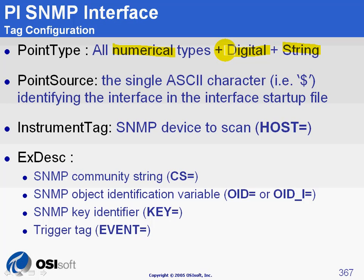Then you have the point source. As usual, this should be the same character as you configured in ICU to identify your interface. The dollar sign ($) is the default point source for the SNMP interface.